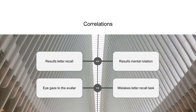We also analyzed the letter recall and mental rotation results using Spearman correlation, which provided a positive correlation between the two test results. Furthermore, in the visible-bystander condition, the eye movements of the subjects were captured. We observed a positive correlation between the duration of the user's eye movements toward the bystander's avatar and the number of incorrect answers in the letter recall task.